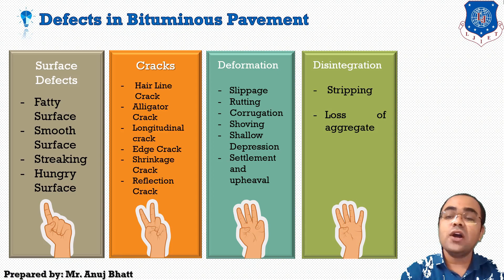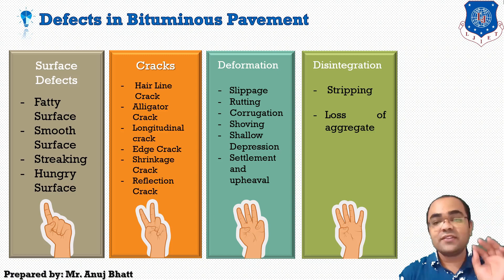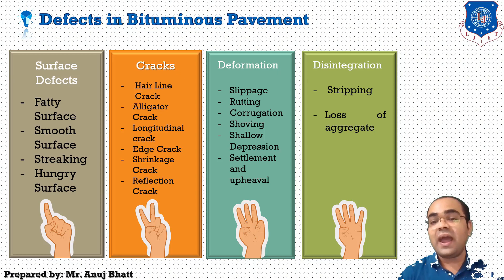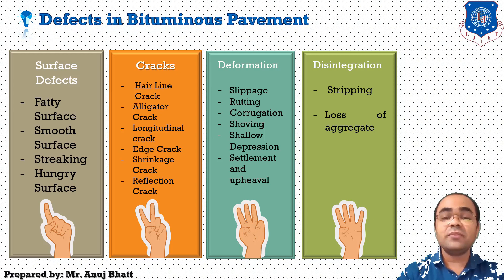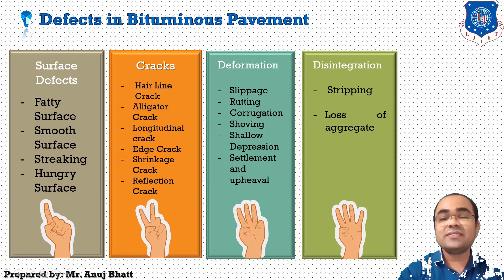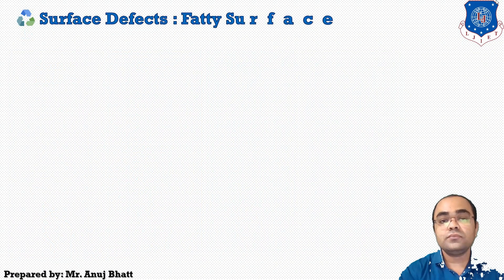The fourth defect category is disintegration, which includes stripping and loss of aggregates. This is how we classify the different defect categories into the four main types: surface defects, cracks, deformation, and disintegration. You must remember all these defects in flexible pavement. Let's now discuss surface defects in detail.